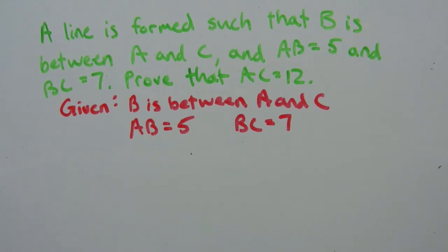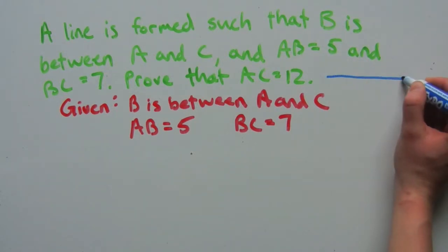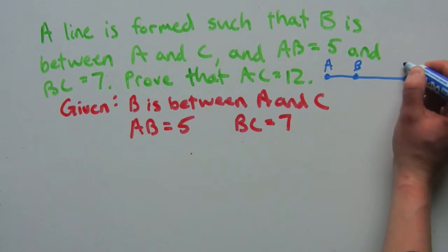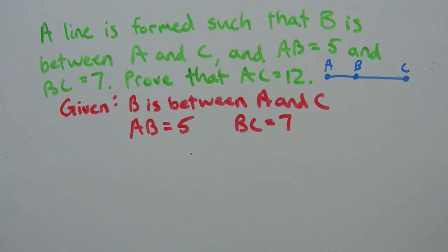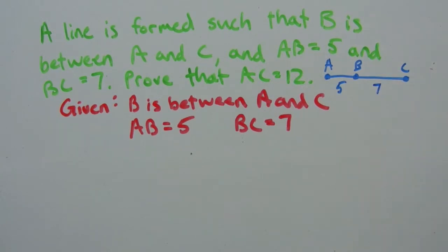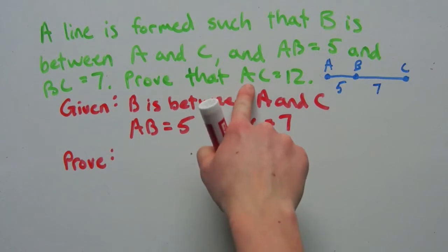Step three — illustrate the given information. Since all points are collinear, we draw a line with A, then B between them, then C, labeling AB as 5 and BC as 7. Step four — state what needs to be proven: prove that AC equals 12.